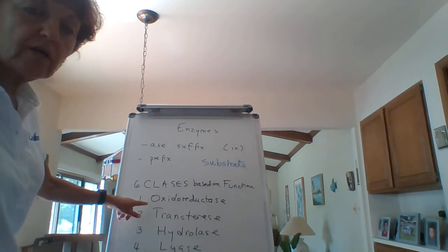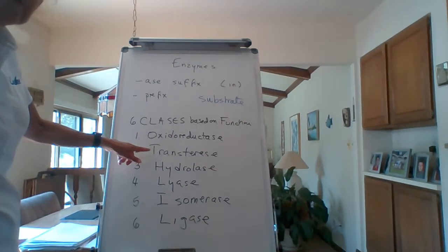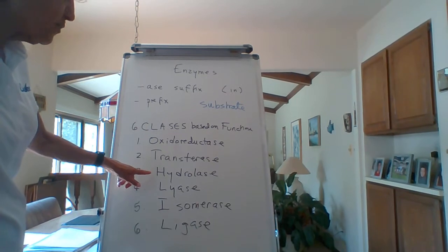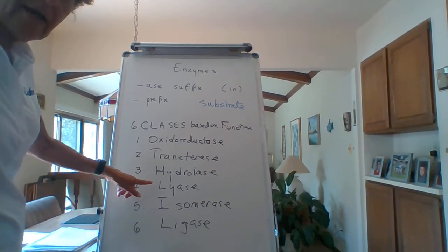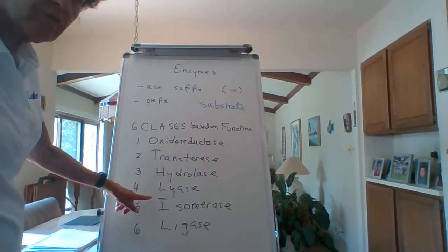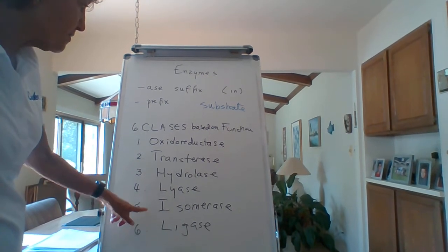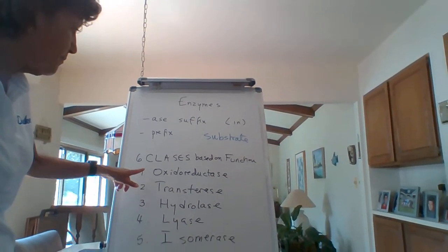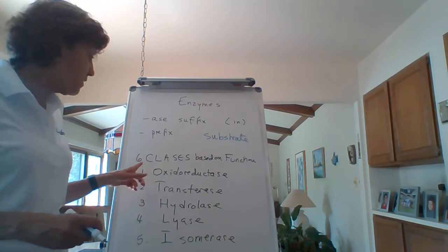These are the six major classes: oxidoreductase, transferase, hydrolase, lyase, isomerase, and ligase. So I'll just give you a little bit of information about each one.